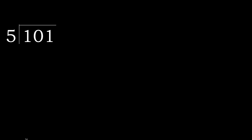101 divided by 5. 1 is less, therefore next: 10 is not less. With 10, 5 multiplied by which number is nearest to 10 but not greater? 5 multiplied by 3 is 15 — that is greater. Multiply by 2 is 10, which is not greater.